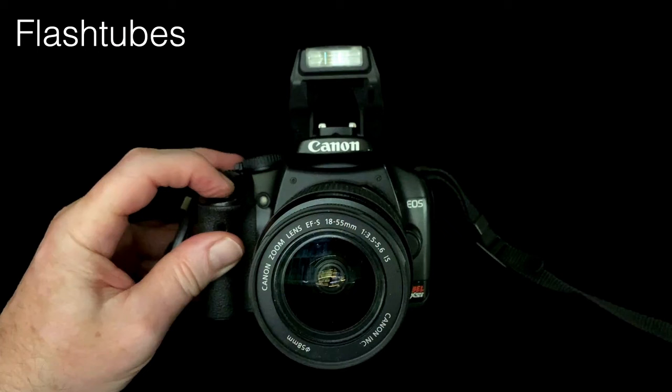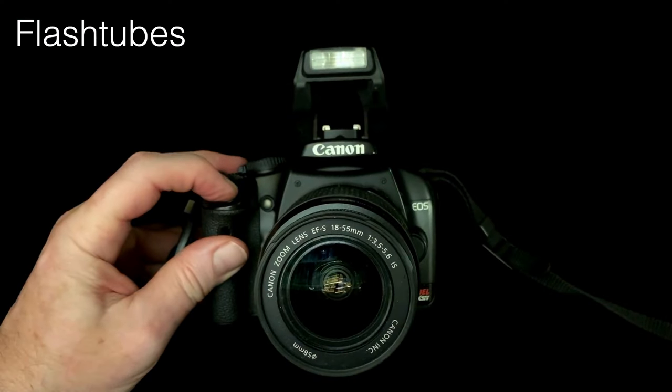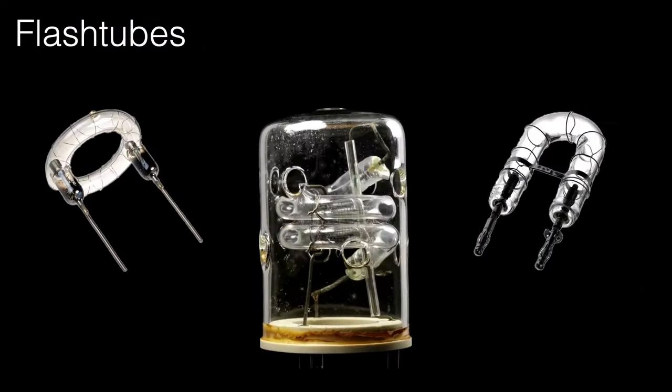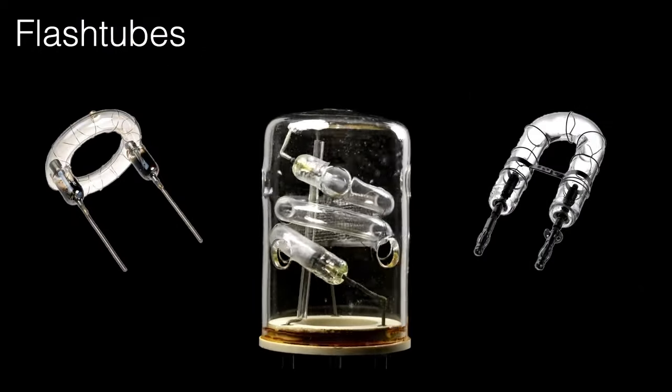Camera flashes and strobes are tubes with a little bit of xenon in them. When a high current briefly passes through the gas, it glows with a bright white color. These come in many shapes, from rings to U-shapes to the more powerful helices.